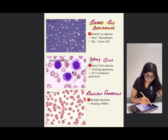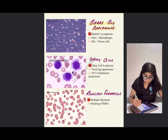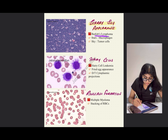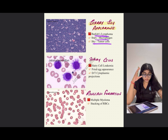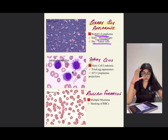Starry sky appearance is seen in Burkitt's lymphoma. The stars are the macrophages and the sky is the tumor cells. The macrophages are present in such quantity that it looks like a star-studded sky.